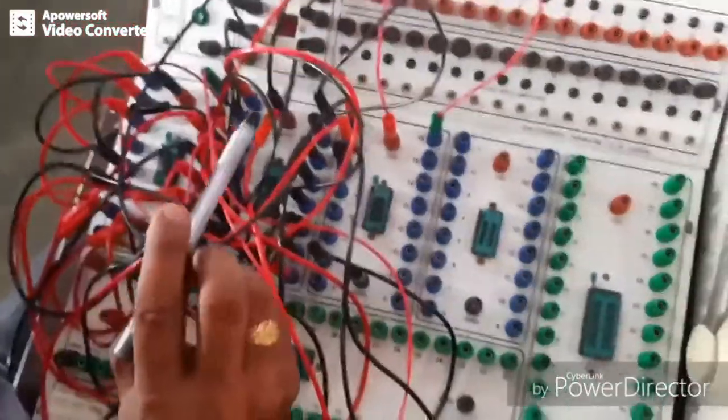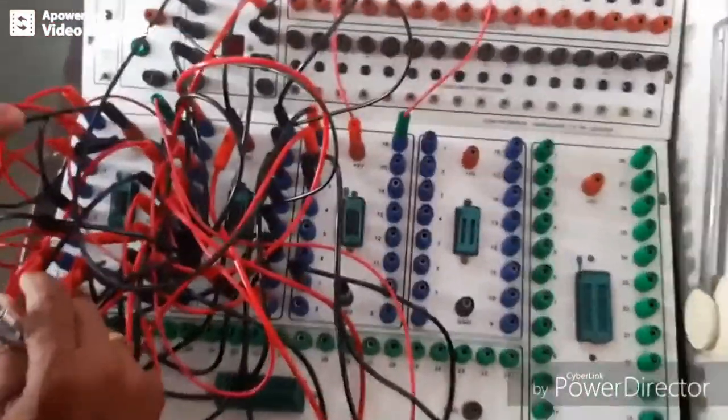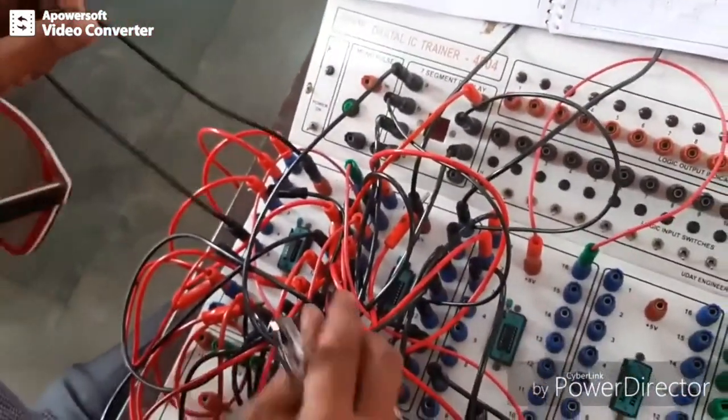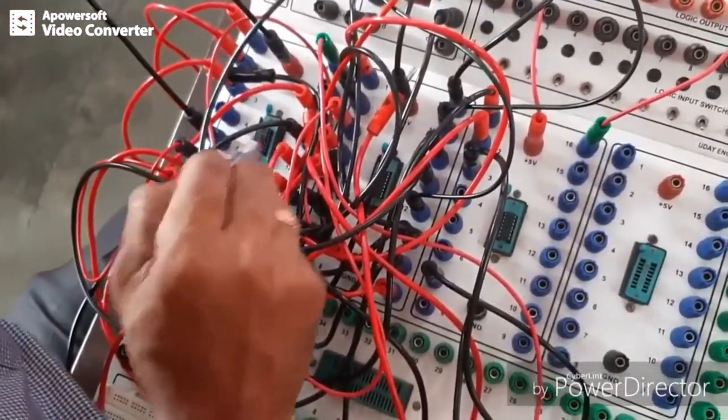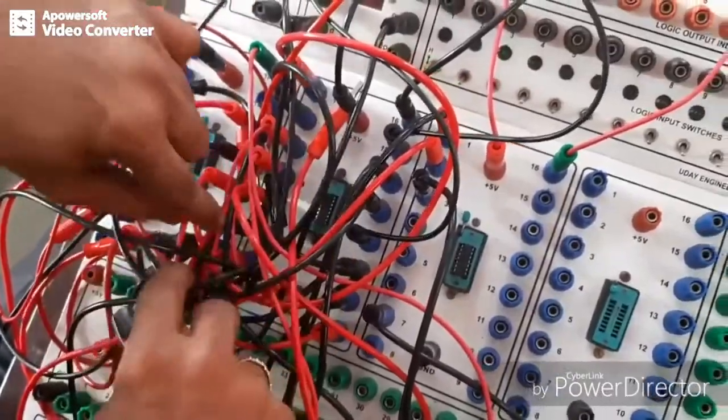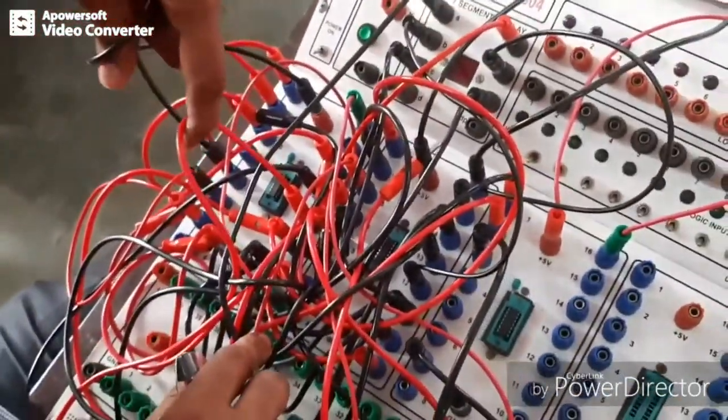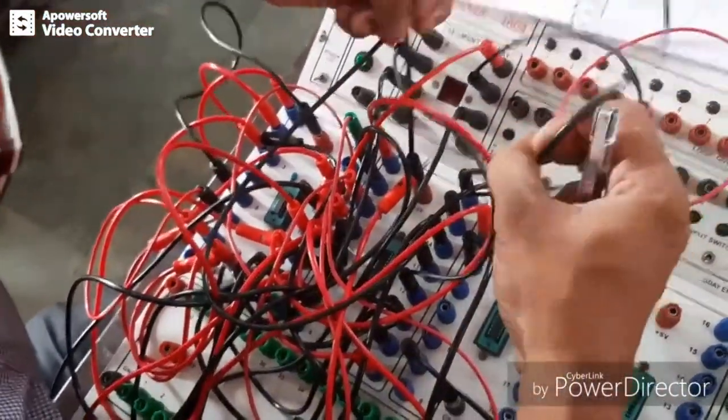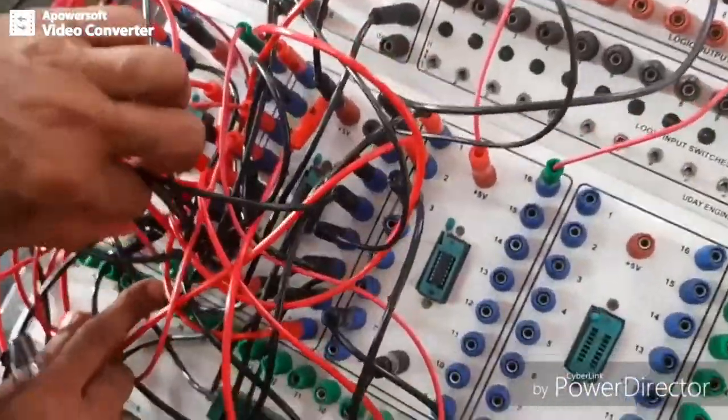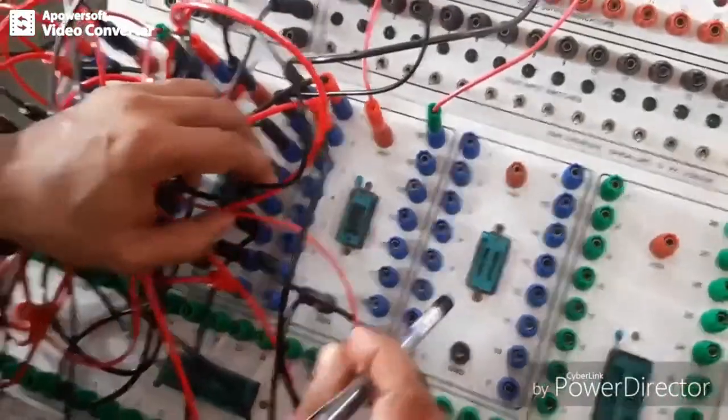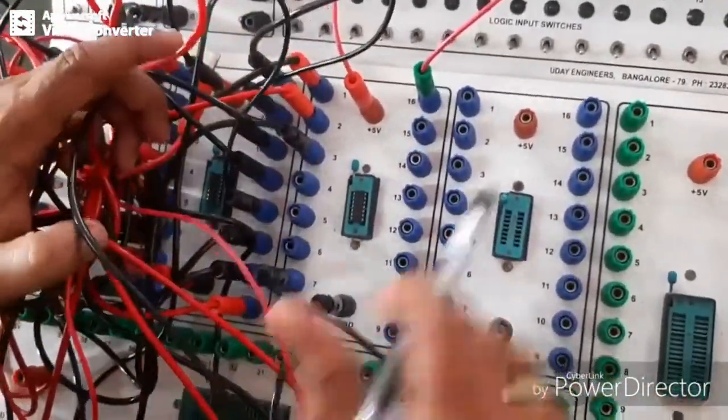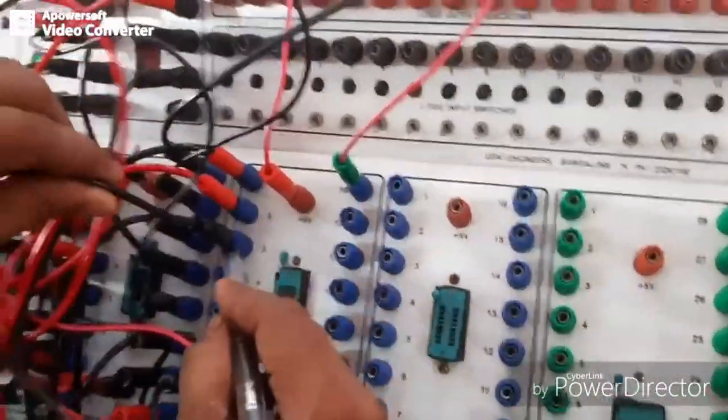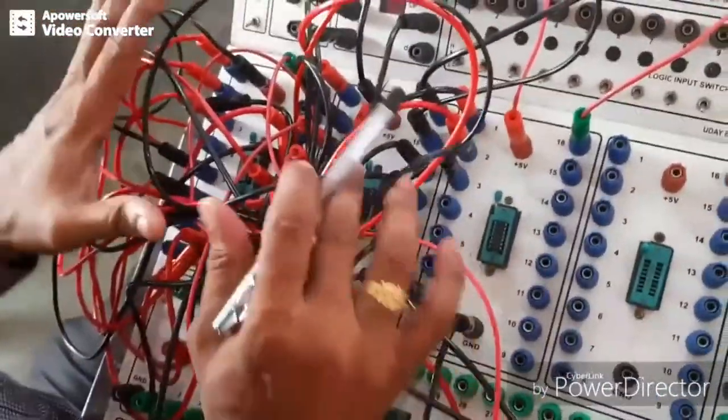First you need to connect VCC and GND. In 7490, VCC is pin 5 and GND is pin number 10, this is a 14 pin IC. For 7447, VCC is pin number 16 and GND is pin number 8. Then 7408, pin 7 is GND and pin 14 is VCC. Pin number 1 and 2 are the input and pin number 3 is the output here.